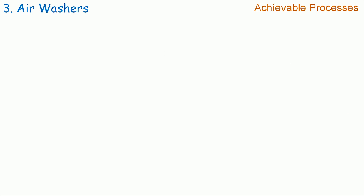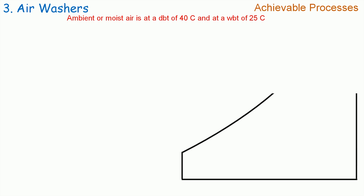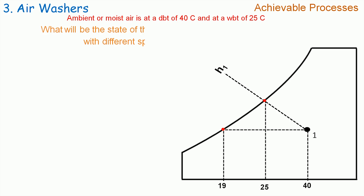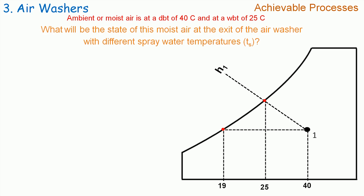Let us now look at the psychrometric processes that are achievable with air washers. Let us consider the moisture at DBT equal to 40°C and WBT equal to 25°C. We will plot this moisture on the psychrometric chart. The state point 1 denotes the moisture at 40°C DBT and 25°C WBT. We can read the dew point temperature corresponding to state point 1 as 19°C and let the enthalpy be H1. While keeping the state of the moisture unchanged, we will change the temperature of the spray water and see how the condition of air at the air washer exit will be changing. In other words, we will be populating this table.